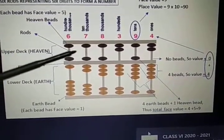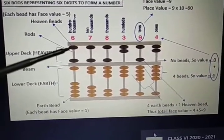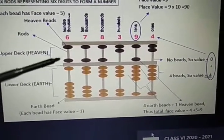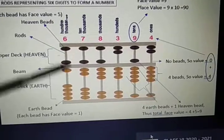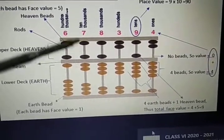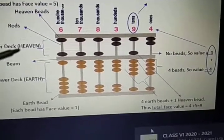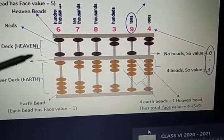Each bead of heaven represents value five and each bead of earth has value one. This is the beam and there are six rods. These rods represent each digit of a number.